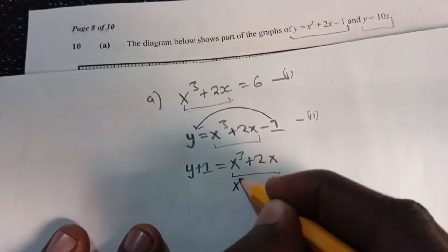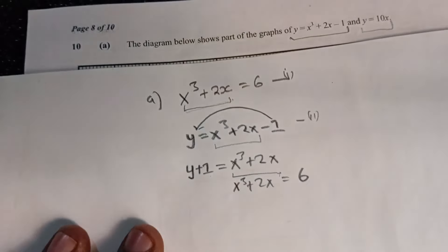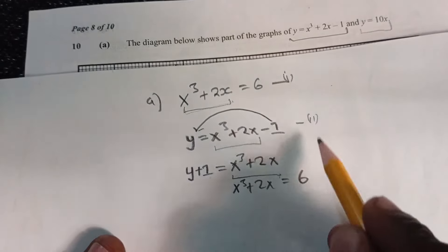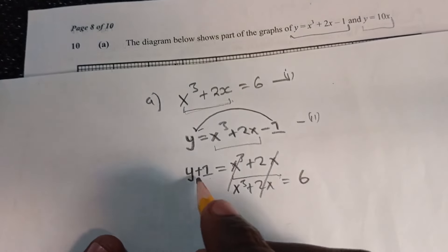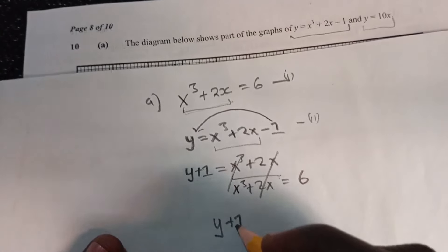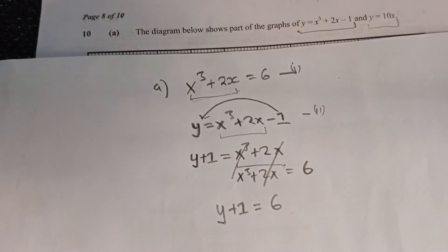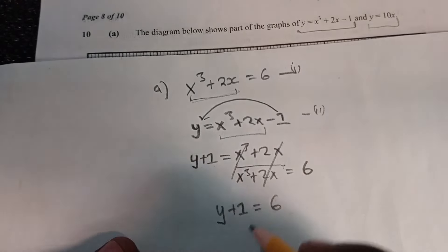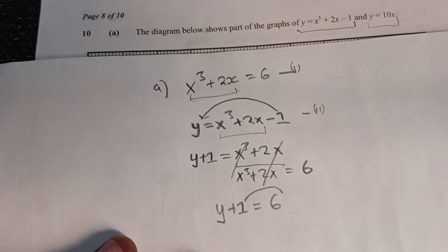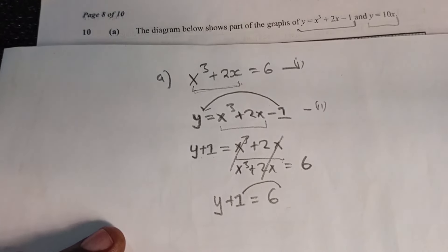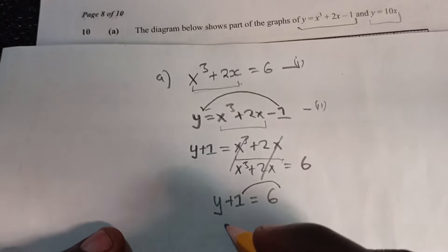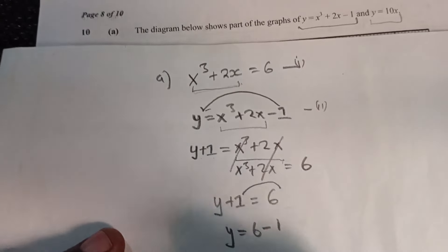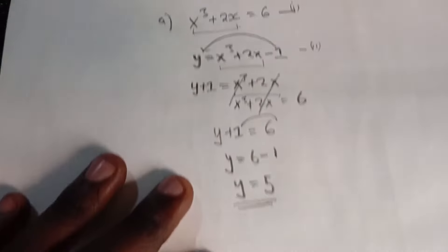We now have y + 1 = x³ + 2x. We can substitute: since x³ + 2x = 6, this becomes y + 1 = 6. Taking the 1 to the other side gives y = 6 − 1 = 5. So y = 5 is what we need to plot on the graph.